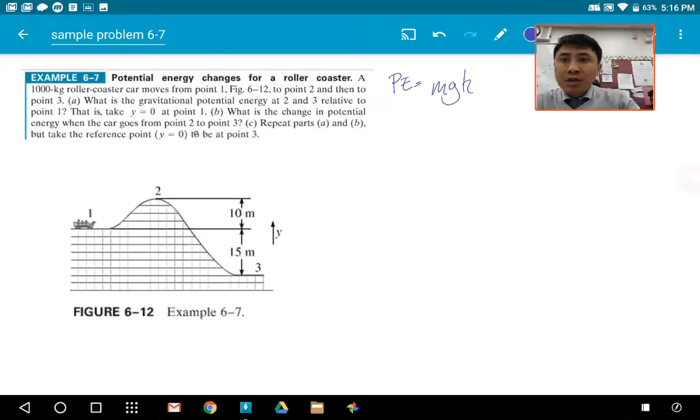So here it says a roller coaster, a 1,000 kilogram roller coaster, so there's our mass, moves along from point 1 to point 2, then 3. What is the gravitational potential energy at 2 and 3? And then what is the change in potential energy when it goes from 2 to 3?